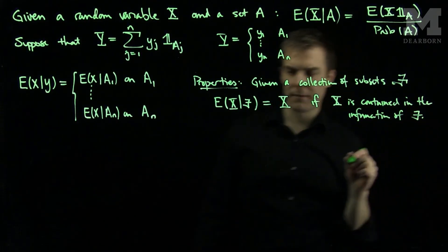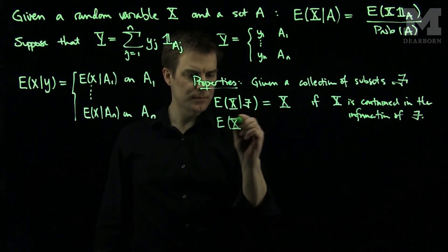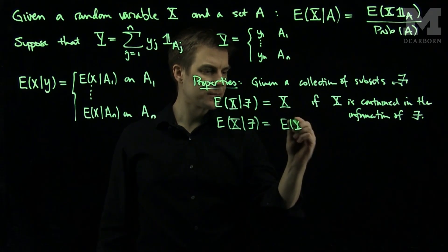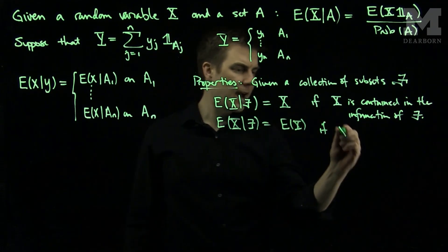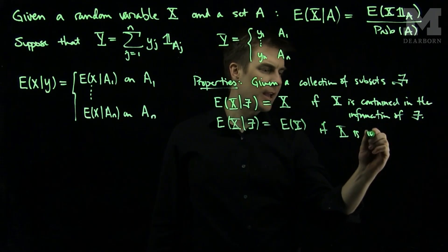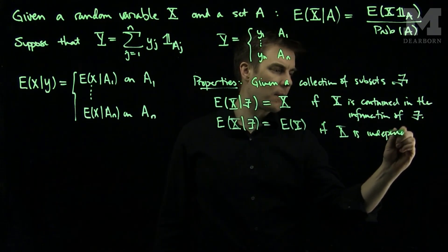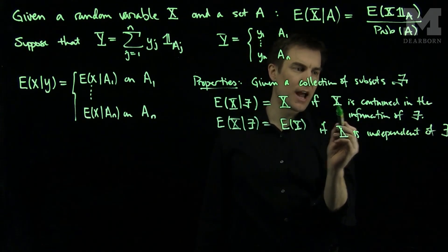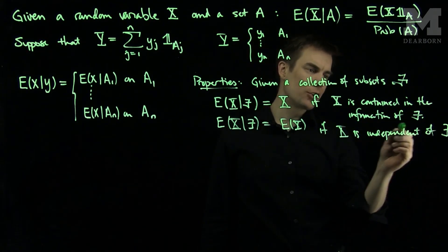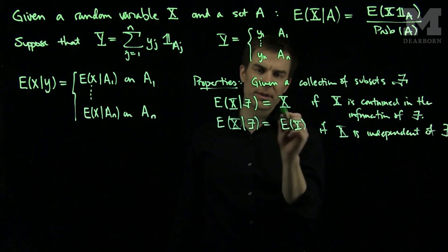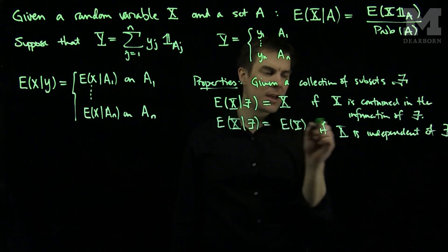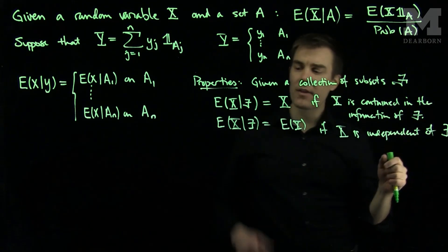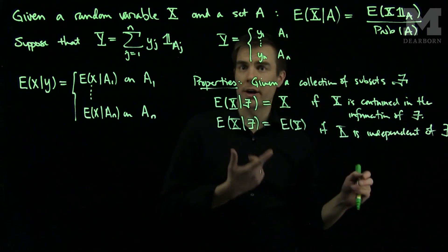The conditional expectation of X given F equals X if the information of X is contained in F. The conditional expectation of X given F equals the expectation of X if X is independent of F. So if the information in X is contained in F, the conditional expectation outputs the random variable X; if X is independent of F, it outputs the ordinary expectation.